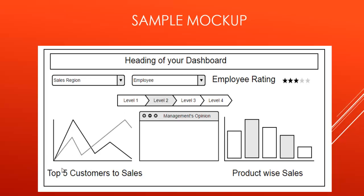Then comes his top five customers by sales — that is, who are his top five customers and how much sales he has given to them compared to the whole organization. And here comes the product-wise sales. Suppose A, B, C, D, E are the products and how much sales they have generated.